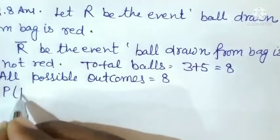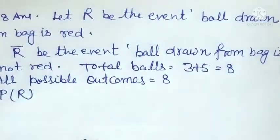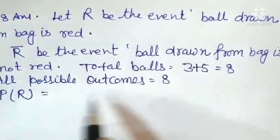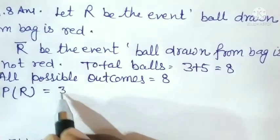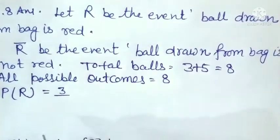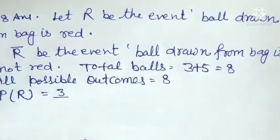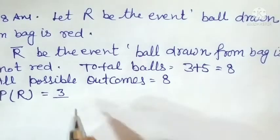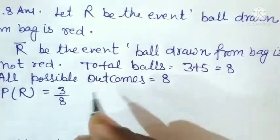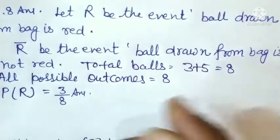P(R) — red کی probability کیا ہوگی؟ R کے favorable outcomes ہیں 3، کیونکہ 3 red balls ہیں۔ Upon total number of possible outcomes 8۔ So P(R) = 3/8.